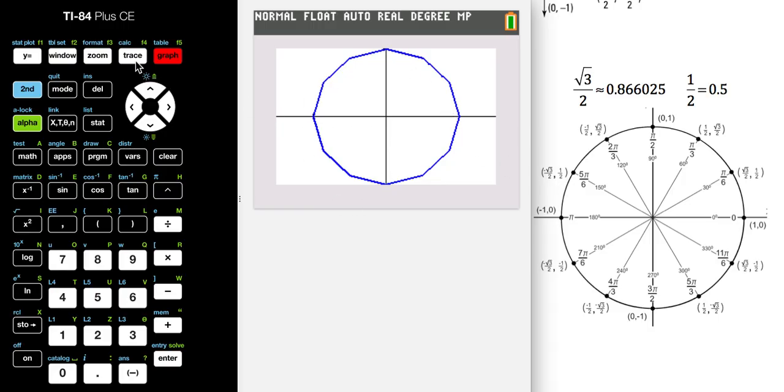Now if we trace around the curve, as soon as you hit trace a little cursor comes blinking up. It tells you t equals 0, so you're at 0 degrees, your x coordinate is 1, your y coordinate is 0, which is that ordered pair right there.